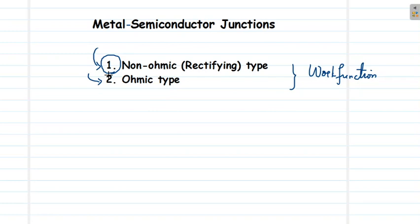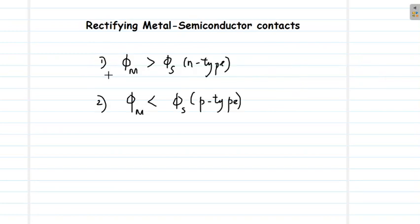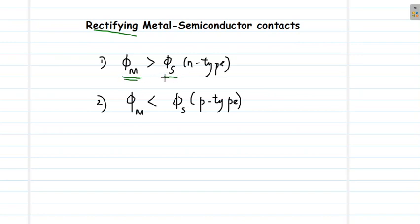A non-ohmic type junction can be formed by merging a metal with an n-type or p-type semiconductor. If the work function of the metal is greater than the work function of an n-type semiconductor, such a junction will be a rectifying contact. Similarly, if a p-type semiconductor is used, the work function of the metal should be lesser than the work function of the p-type semiconductor.